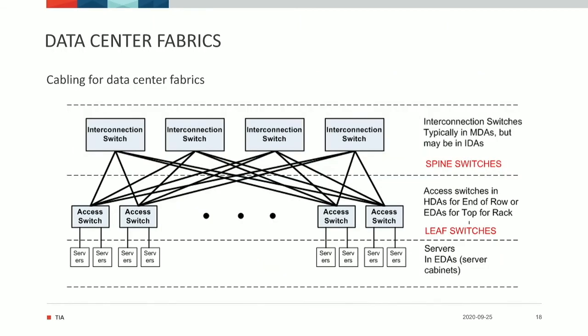We have an addendum in the data center standard regarding how to design telecom cabling infrastructure for data center fabrics. This leaf-spine architecture, which is now very common, was originally considered to be challenging for data center infrastructure standards. One switch manufacturer mentioned to the director of standards in TIA that he didn't think TIA-942 would apply to data center fabrics, so we took that on as a challenge and developed an addendum for how you support data center fabrics using structured cabling, including fully meshed and leaf-spine architecture designs.